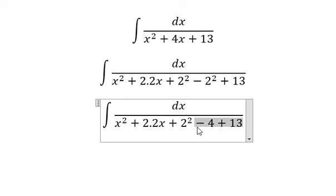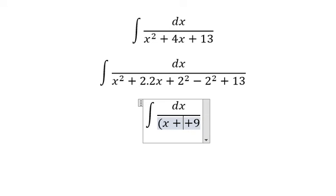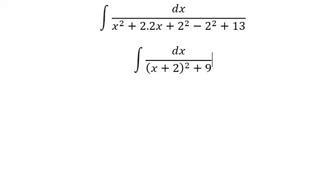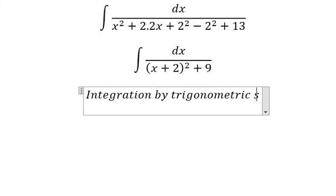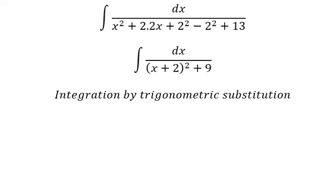This one we will change to (x + 2) to the power of 2 plus 9. Next we need to use integration by trigonometric substitution, so we put x plus 2 equals to 3 times tan t.